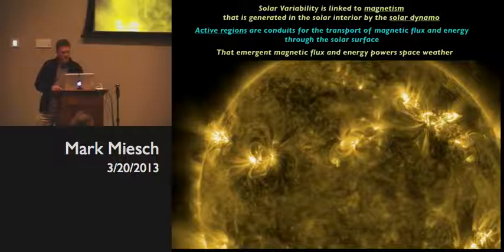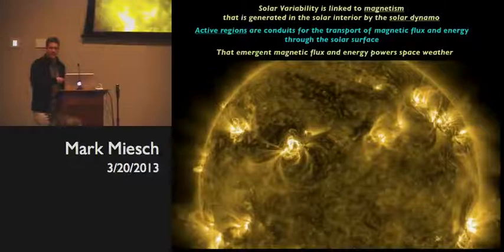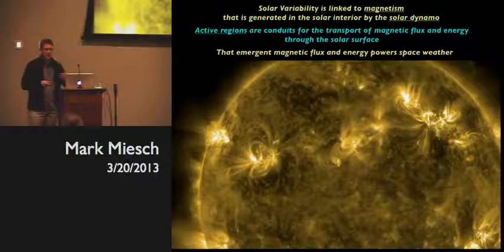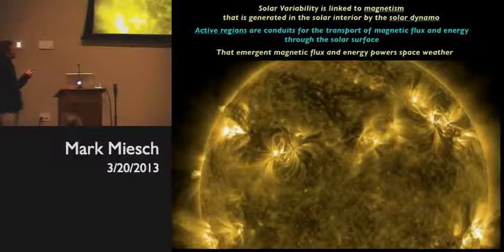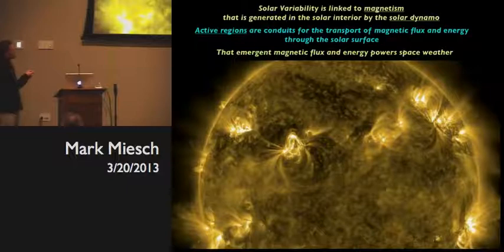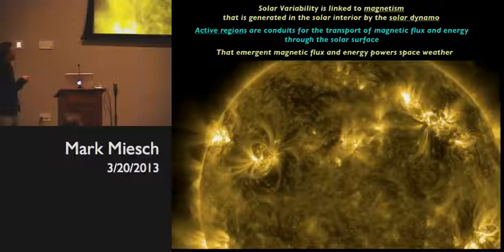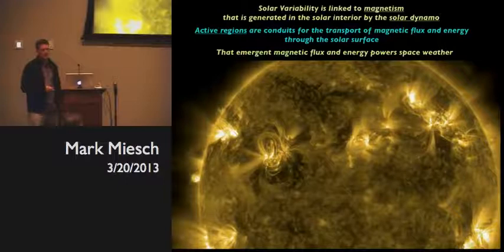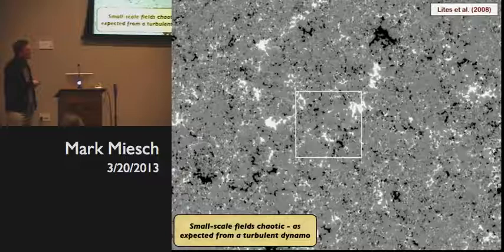It will come as no surprise to everybody in this room that solar variability is linked to magnetism, and that magnetism is created in the interior of the sun and passes through the surface. The sites where it passes through the surface we call active regions. For the purposes of this talk, I'll essentially talk about active regions and sunspots as meaning the same thing — sunspot groups or pairs that form the basis of loops of magnetism extending up into the corona. This magnetism provides the energy that powers space weather: coronal mass ejections, flares, and the solar wind.